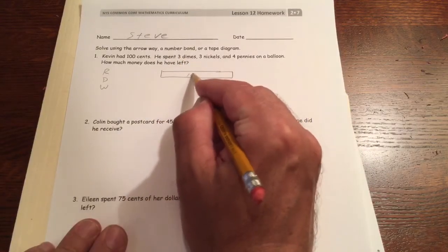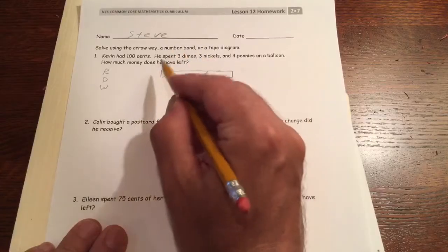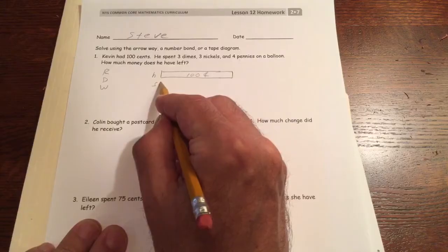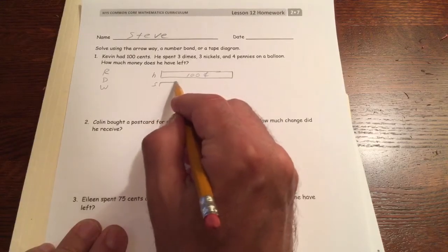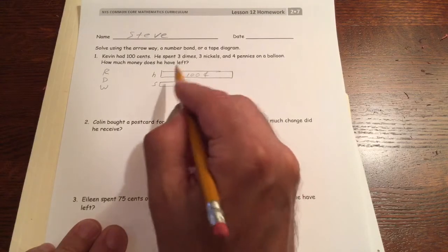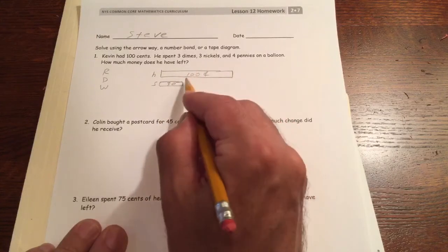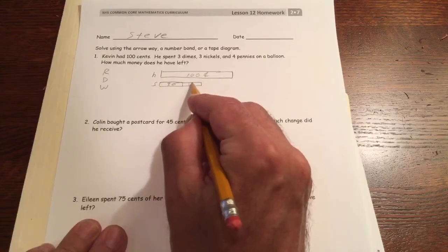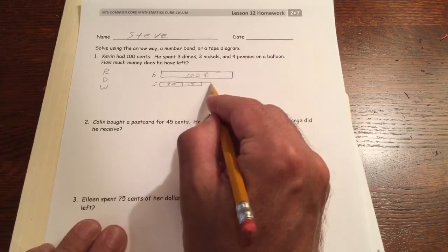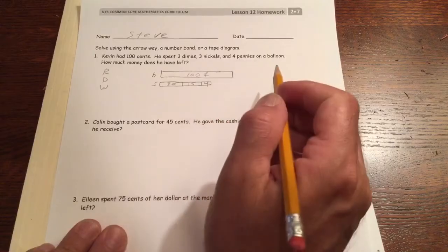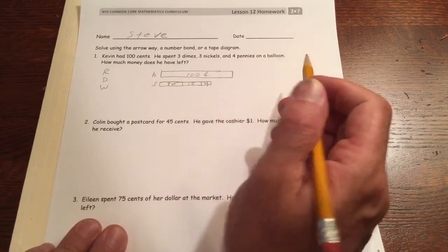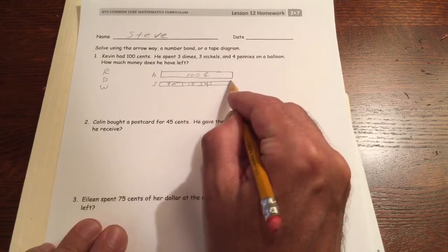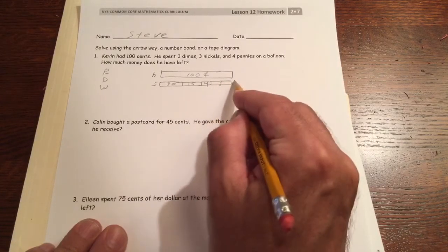Here's a tape diagram. Here's his hundred cents, that's what he had. Here's what he spent. He spent three dimes, that's 30, three nickels that's three fives for 15, and four pennies. That's what he spent on the balloon. And this is what he had left.